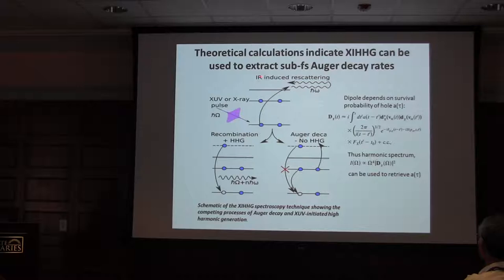But of course, this is happening in the presence of very fast electronic processes, like Auger decay, which may fill that hole. If they do fill that hole, then we lose the harmonic signature. So the dipole associated with the harmonic generation depends upon the survival probability of that hole, A(τ). It depends in an SFA kind of picture in the following way. There's a kind of Lewenstein picture. Thus, if you measure the harmonic spectrum, which is essentially the square of a Fourier transform of this, you can, in principle, retrieve the survival probability of the hole.